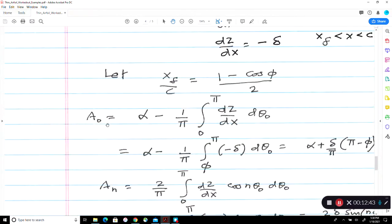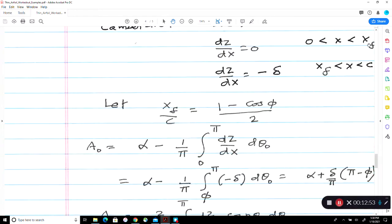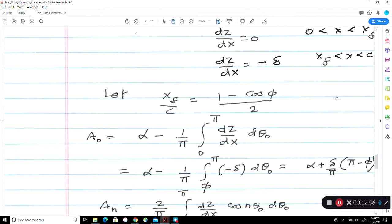So this is our expression for alpha, a naught, and an from our thin aerofoil theory. x of the dz dx is 0 up to xf. Downstream of xf, that means up to angle theta naught equal to phi, we don't get any slope. We only get from phi to pi, and that slope is constant. So we could analytically integrate this expression. Minus delta is a constant that will come out. It becomes plus delta over pi. Integral will be phi minus phi. So we can solve for the a naught.